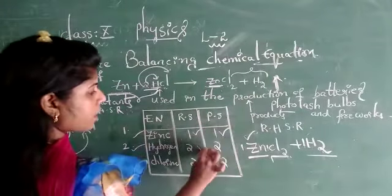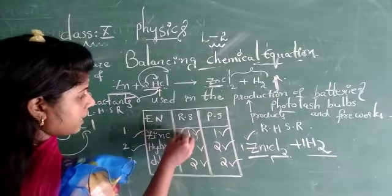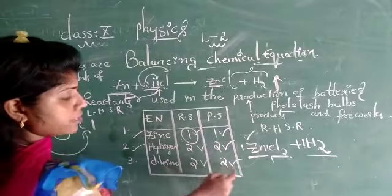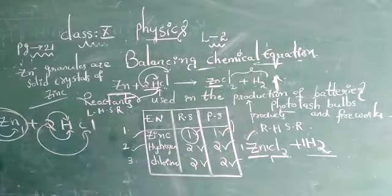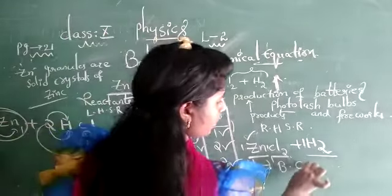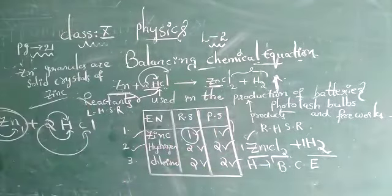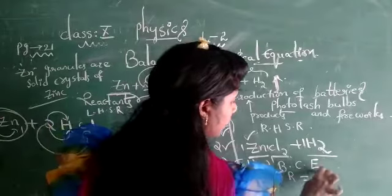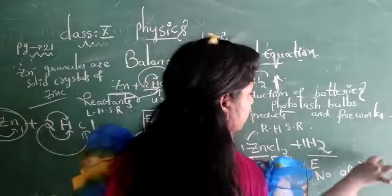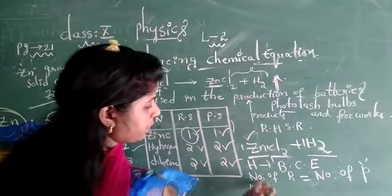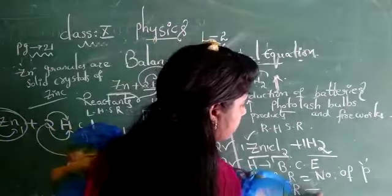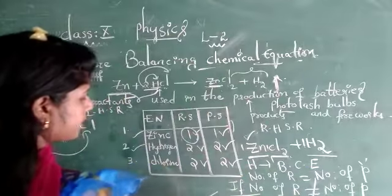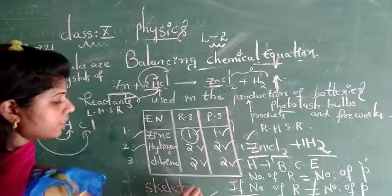Now check whether we got the same numbers on reactant and product sides. Zinc: reactants 1, products 1. Hydrogen: reactants 2, products 2. Chlorine: reactants 2, products 2. All values are equal. Hence we can say it is a balanced chemical equation — when the number of atoms of reactants equals the number of atoms of products. If they are not equal, then we call it a skeleton equation.